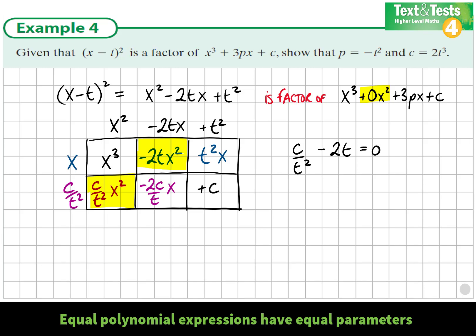The coefficients of x² inside the array must add up to the coefficient in the given. So c/t² - 2t must equal zero. The question asks us to express c in terms of t³, so add 2t to both sides and multiply by t². We get c = 2t³, which proves the first thing.